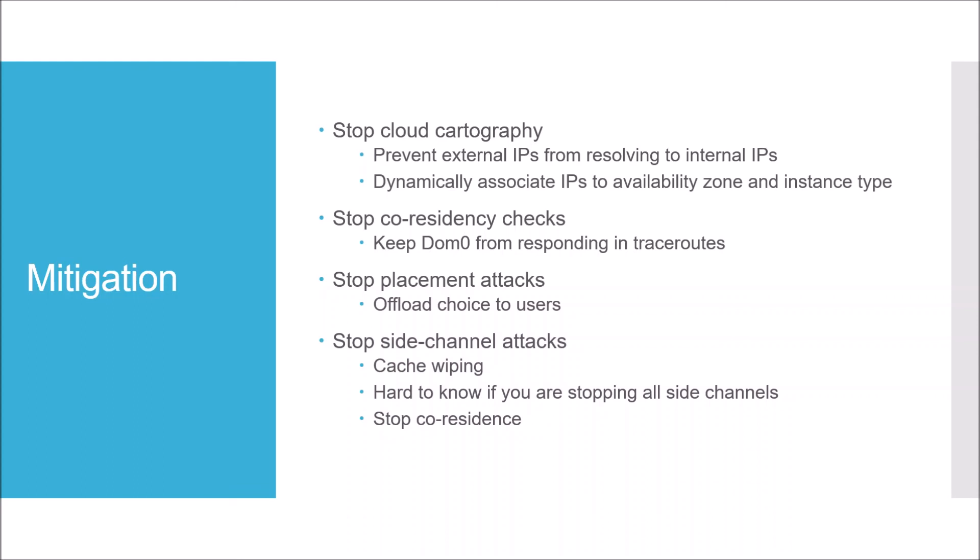If the adversary can't be co-resident with you, they can't open a side channel. If that option isn't taken, one mitigation is to wipe the caches used for load measurements, but it's difficult to know if you're stopping all side channels since there are many possible methods. The authors ultimately recommend that the best way to stop side-channel attacks is to prevent co-residency, and the best way to prevent co-residency is to offload the choice to users — which is the paper's primary suggested solution.